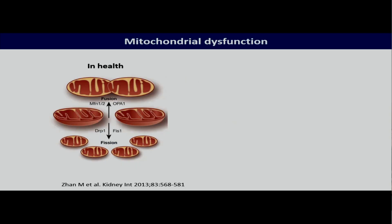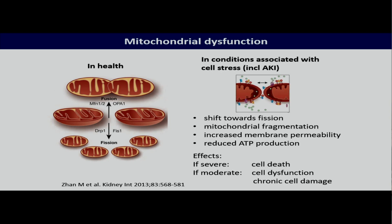It's also been shown that sepsis is a mitochondrial disease, and we now know that this affects tubular cells and cells within the kidney. Normally, we have a very good and stable balance between mitochondria that fuse and split, and this relationship is stable in health. It turns out that in conditions associated with cell stress, including acute kidney injury, the shift is more toward splitting, and the organs end up with tiny, fragmented mitochondria.